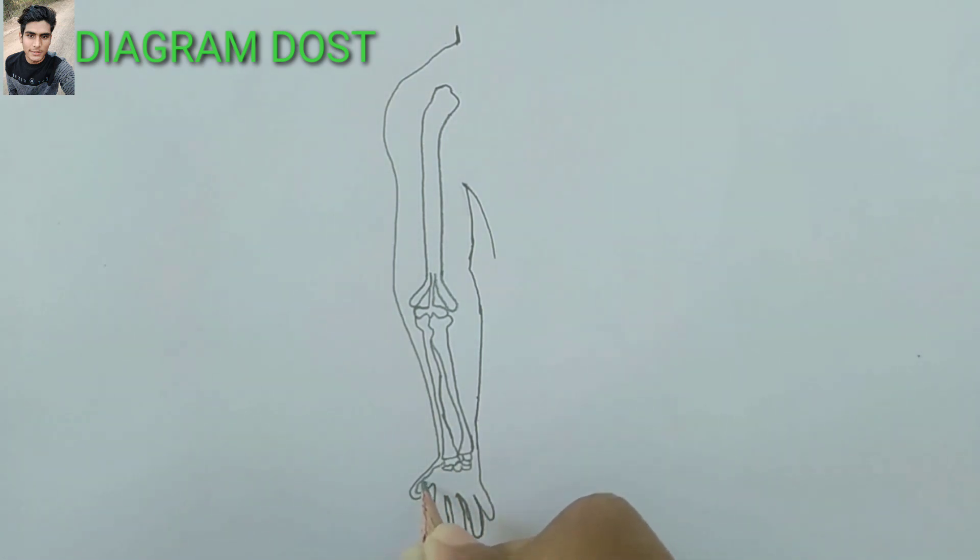Now I am making metacarpals and phalanges. This is metacarpal. This is also metacarpal. This is phalanges. This is also phalanges.